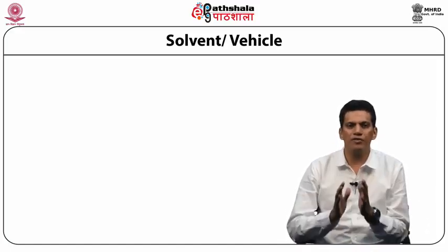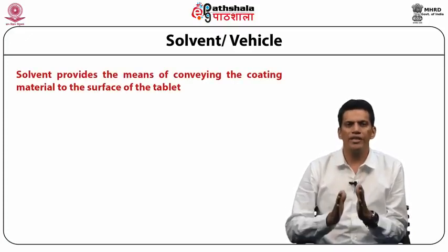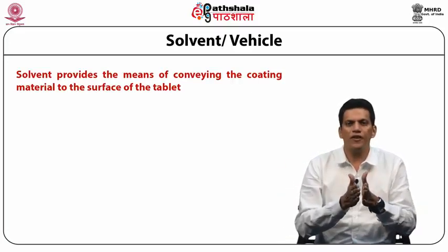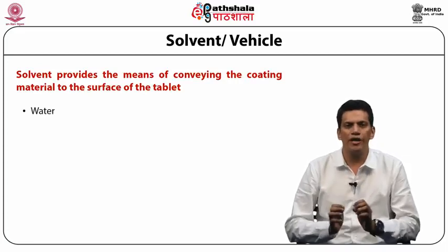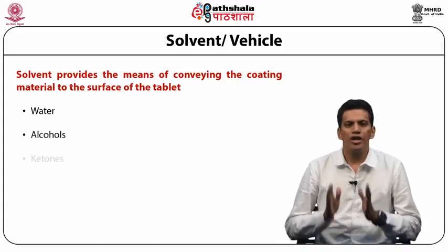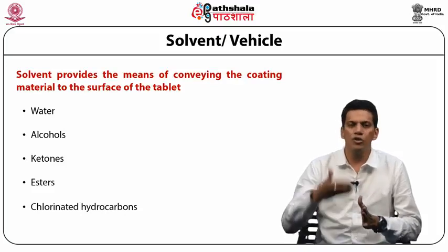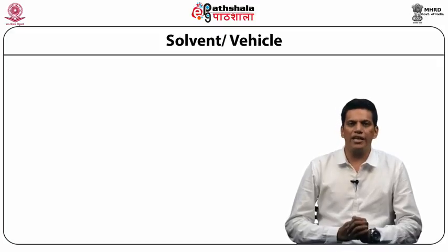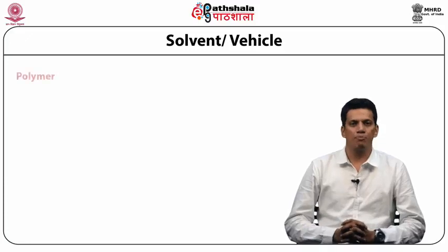The first component is solvent, also called the vehicle. Solvent provides the means of conveying the coating material to the surface of the tablet. Water is primarily used as solvent for aqueous coating procedures. Alcohols, ketones, esters, and chlorinated hydrocarbons are used for organic coating. The second ingredient, which is the heart of the coating composition, is polymer. Polymers are film-forming agents.